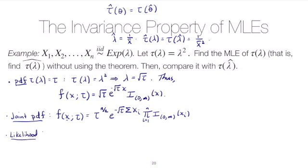The likelihood function as a function of τ is τ^(n/2) times e to the negative √τ times n times x̄, where we write the sum of the x_i's as n·x̄. The product of indicators is not a function of τ, so since the likelihood function only needs to be proportional to the joint PDF, we can drop that constant.